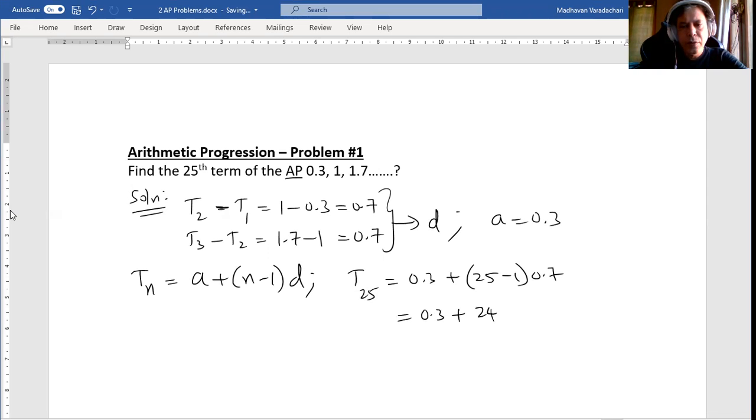Here t₂₅ is 0.3 plus 24 times 0.7. Let us calculate what it is. 24 into 0.7, the result has to be added to 0.3, so we get 17.1 as the 25th term.